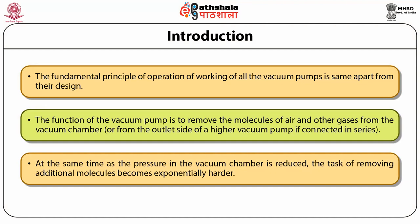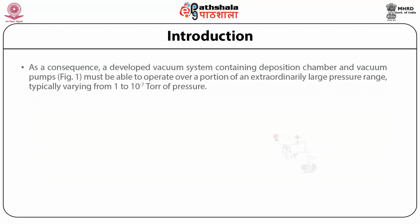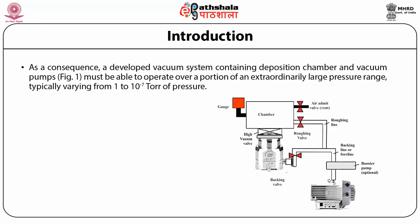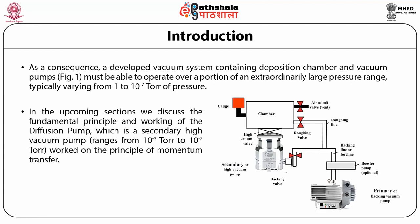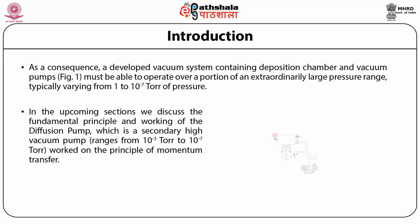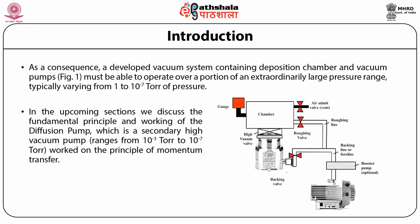The fundamental principle of operation of all vacuum pumps is the same apart from their design. The function of the pump is to remove the molecules of air and other gases from the vacuum chamber, or from the outlet side of a higher vacuum pump if connected in series. As the pressure in the vacuum chamber is reduced, the task of removing additional molecules becomes exponentially harder. As a consequence, a developed vacuum system must be able to operate over a pressure range which typically varies from 1 to 10⁻⁷ Torr. We will discuss the diffusion pump, which is a secondary high vacuum pump with a range from 10⁻³ Torr to 10⁻⁷ Torr, working on the principle of momentum transfer.